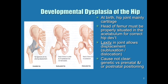In this disorder, the hip joint, which is mainly cartilage, becomes displaced. The head of the femur is supposed to be situated right into the acetabulum in order for the hip to develop normally. However, when we have developmental dysplasia of the hip, there's a laxity in the joint, and it allows the hip to either sublux, which means to partially move out of its joint space, or completely dislocate out of the joint space.